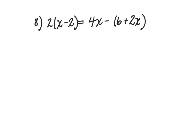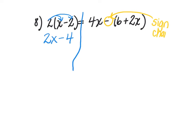Number 8 is 2 times the quantity x minus 2, is equal to 4x minus the quantity 6 plus 2x. There is a lot going on in this problem, so the line down the equal sign is very important. On the left side, I'm going to distribute my 2 to both terms inside the parentheses — 2 times x is 2x, and 2 times negative 2 is negative 4. On the right side, I need to distribute the sign changer, which changes the signs of the terms in the parentheses.